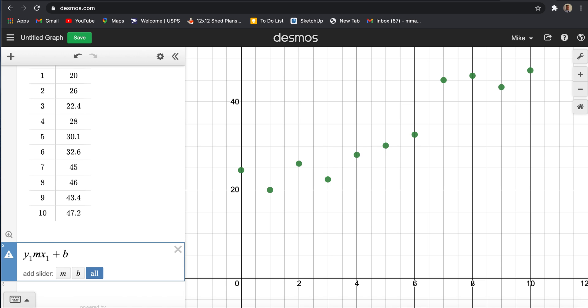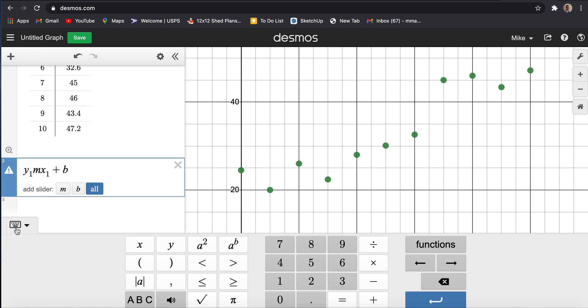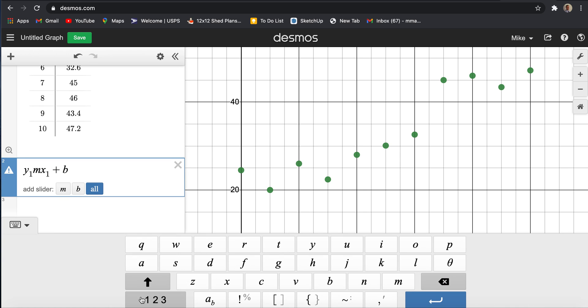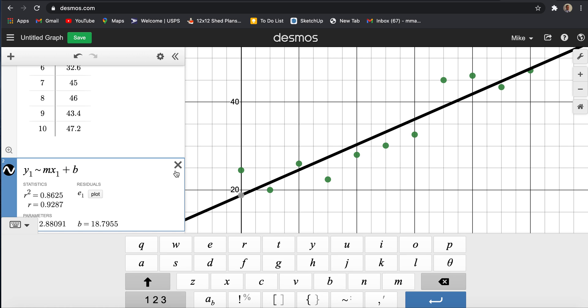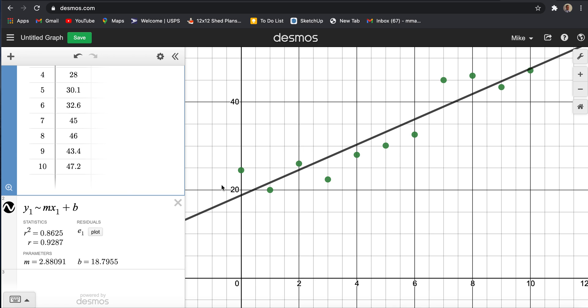I'm gonna go Y1 is equal to MX1 plus B. I actually want to change this. I don't want to make it equals. I want to have a little approximate sign. And I'll achieve that by clicking the keyboard tool, the ABC button, and then this here. Now that formula that's added in created a line of best fit.